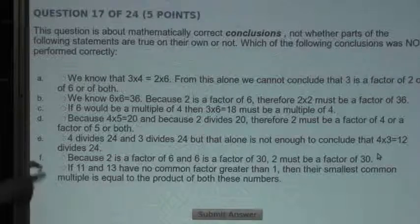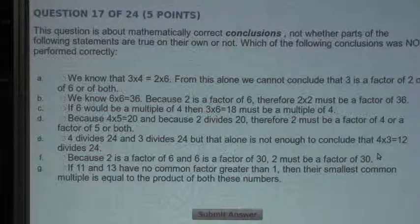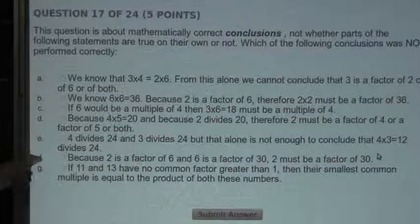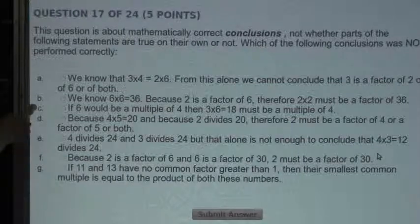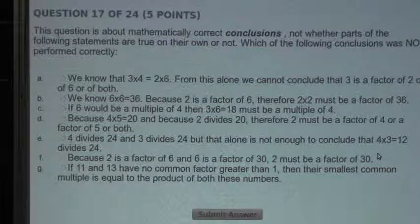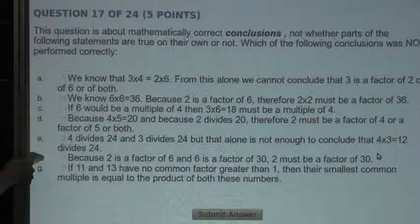So let's look at Statement F. Because 2 is a factor of 6 and 6 is a factor of 30, 2 must be a factor of 30. Statement F has the exact same concept as Statement C. So if 2 is a factor of 6, then 2 must be a factor of any multiple of 6, which is in this case 30. So Statement F would be correct.